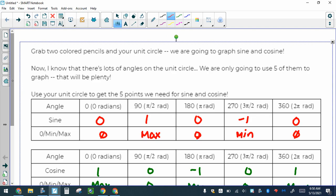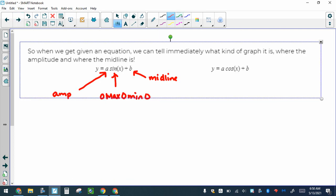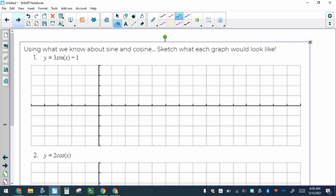Cosine is very similar. Notice that for cosine, you always go max, 0, min, 0, max. Anytime you see cosine, you're going max, 0, min, 0, max. But the amplitude and the midline are in the same place. The number out in front, that's your amplitude. Your number at the end, that's your midline.